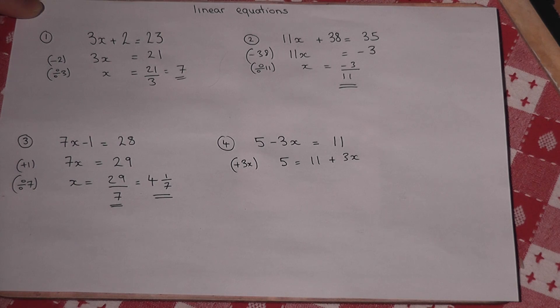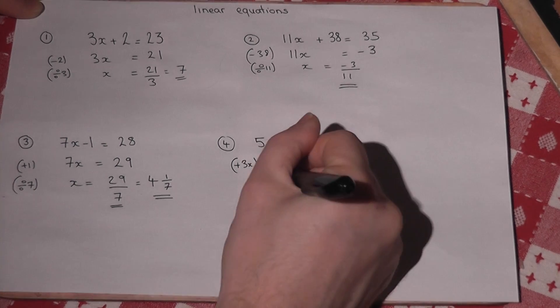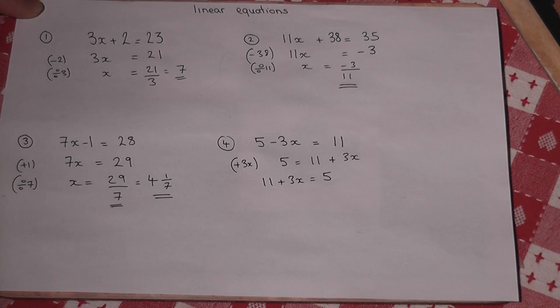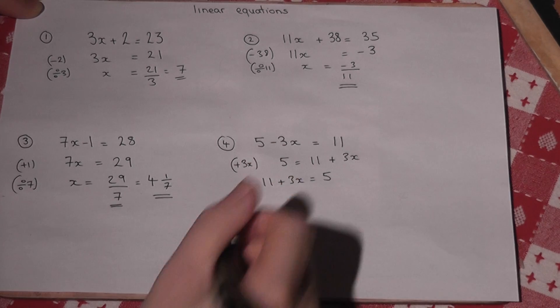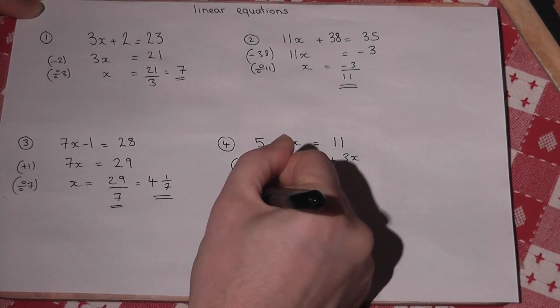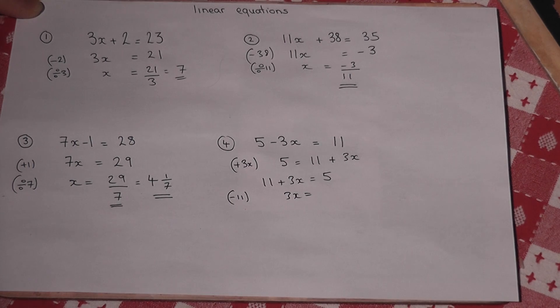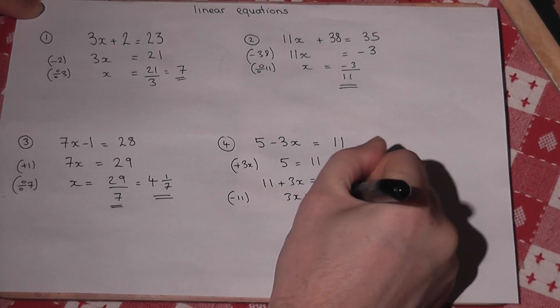I can then rewrite this as 11 plus 3x equals 5. And then remove the 11 by taking 11. So 3x equals 5 take away 11, which is minus 6.